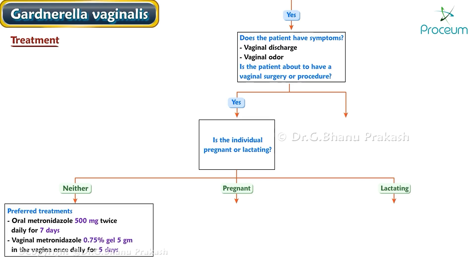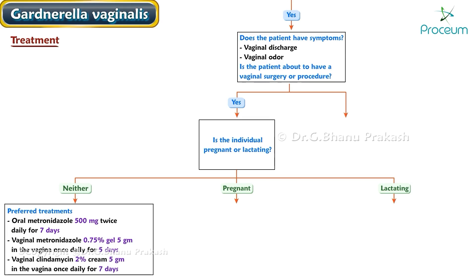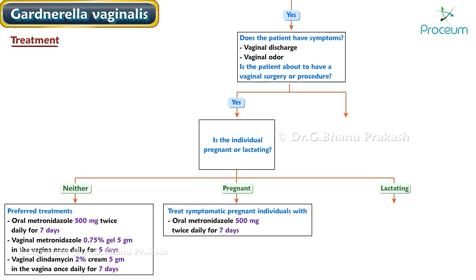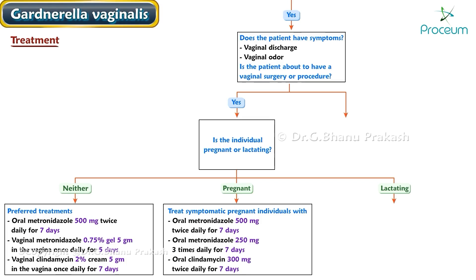Alternative non-pregnant treatments include vaginal metronidazole 0.75% gel, 5 g intravaginally once daily for 5 days, or vaginal clindamycin 2% cream, 5 g intravaginally once daily for 7 days. If the patient is pregnant, treat symptomatic pregnant individuals with oral metronidazole 500 mg twice daily for 7 days, or oral metronidazole 250 mg three times daily for 7 days, or oral clindamycin 300 mg twice daily for 7 days.